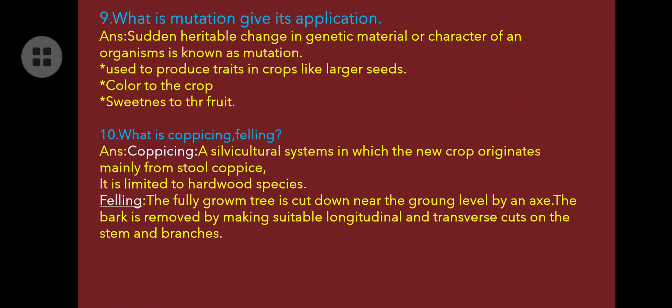What is mutation? A sudden heritable change in the genetic material or character of an organism is known as mutation. It is used to produce new traits in crops such as larger seeds, color in crops, and sweetness in fruits.